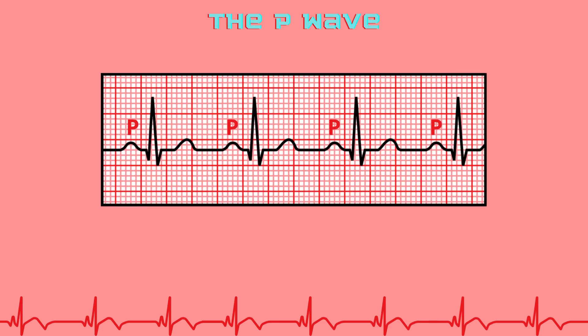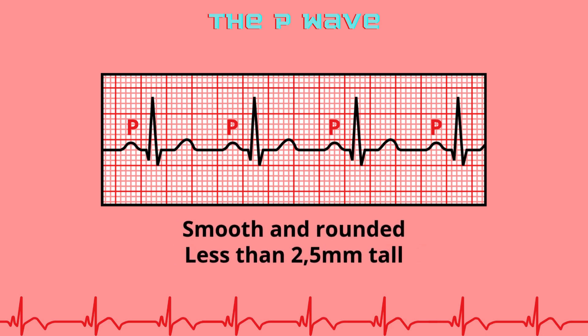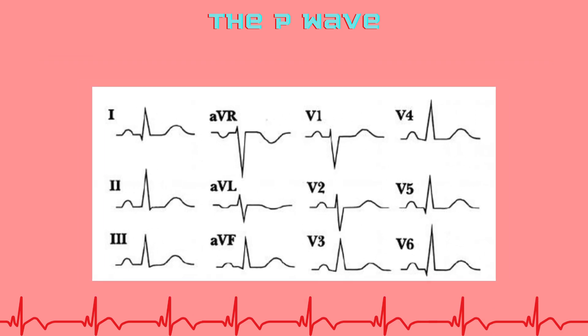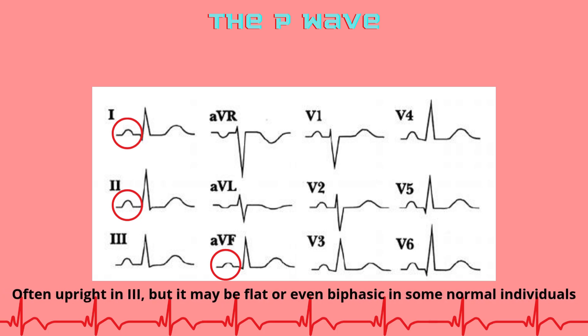The P-wave represents atrial depolarization, beginning in the sinoatrial node and spreading across both atria. It should be smooth and rounded, less than 2.5 mm tall and less than 0.12 seconds wide — that's 3 small boxes. It is upright in leads 1, 2, and AVF, and may be biphasic in V1. An abnormal P-wave can suggest atrial enlargement or ectopic atrial activity.